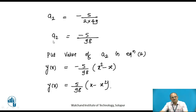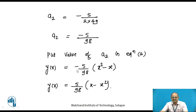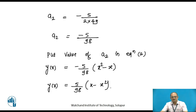Substituting a2 = −5/98 into equation 2: y(x) = (−5/98)·(x² − x), or equivalently y(x) = (5/98)·(x − x²). In this way, we can find the approximate solution of a differential equation using Galerkin's weighted residual method.